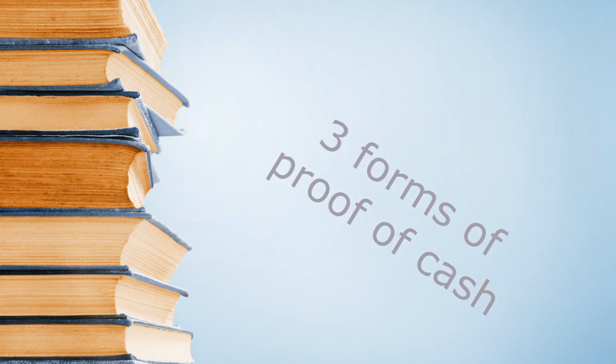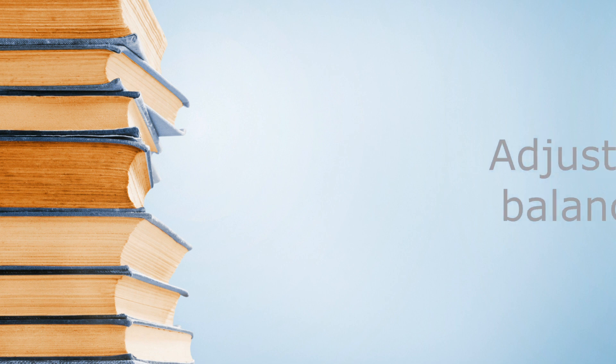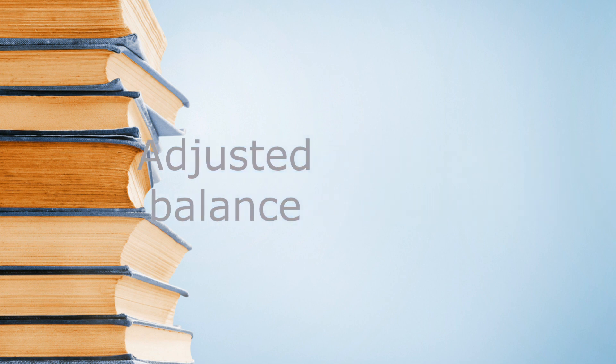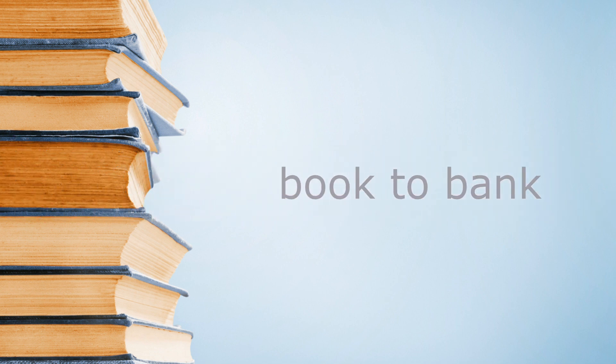There are three forms of proof of cash: the adjusted balance method, the book to bank method, and the bank to book method.